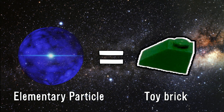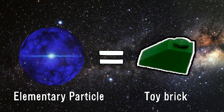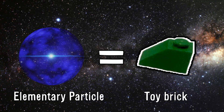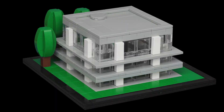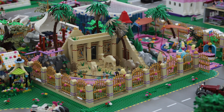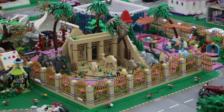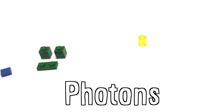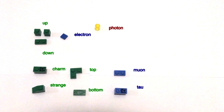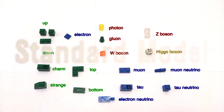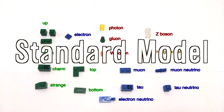An elementary particle is like a toy brick. It can be used to make anything from a small house to an entire city. Familiar elementary particles include quarks, electrons, photons, and a bunch more. This collection is known as the standard model.